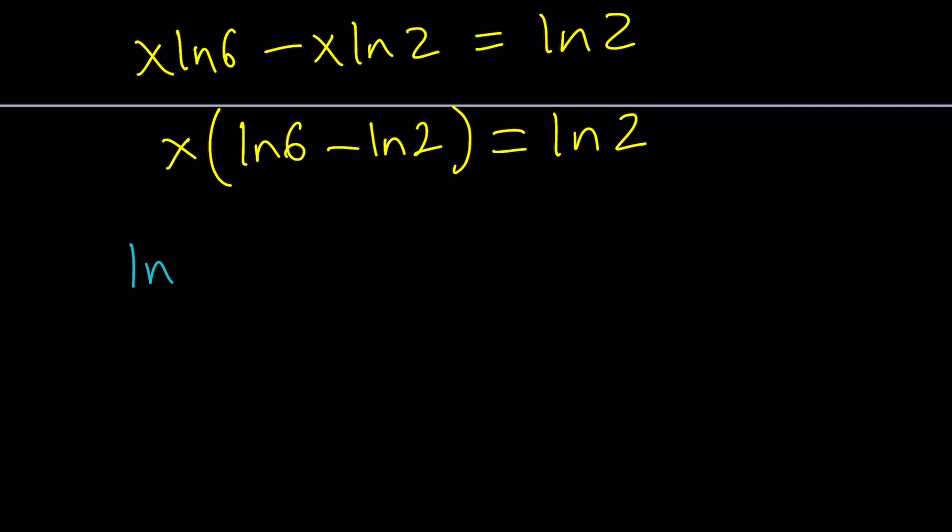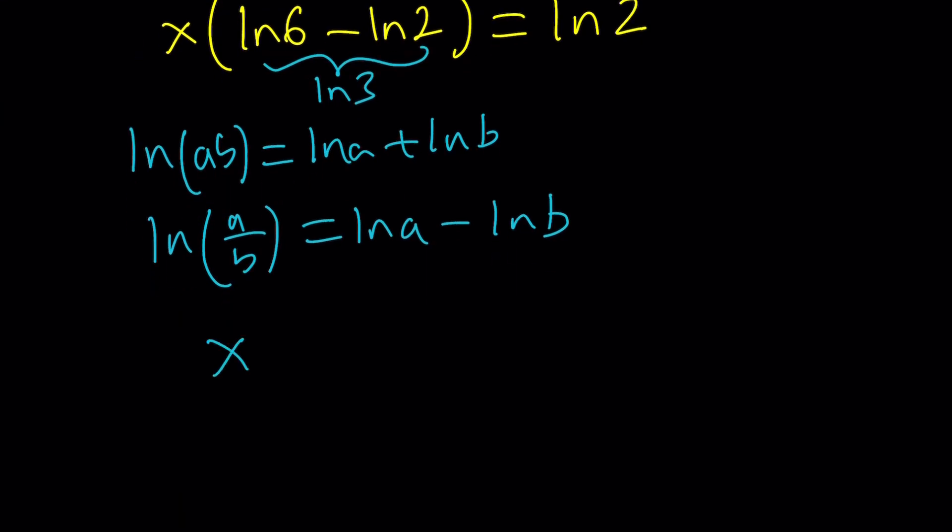The product rule says ln AB equals ln A plus ln B. And the quotient rule says ln A over B equals ln A minus ln B. The quotient rule is probably easier because 6 divided by 2 is equal to 3. So this will become ln 3. So now we get X ln 3 equals ln 2, which means X equals ln 2 divided by ln 3.